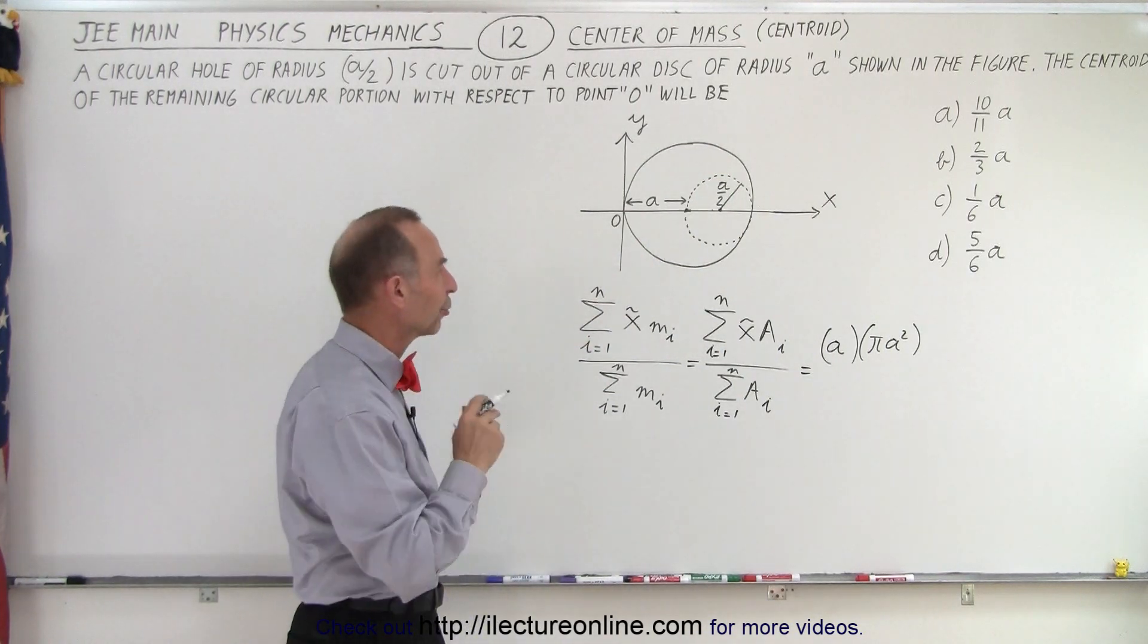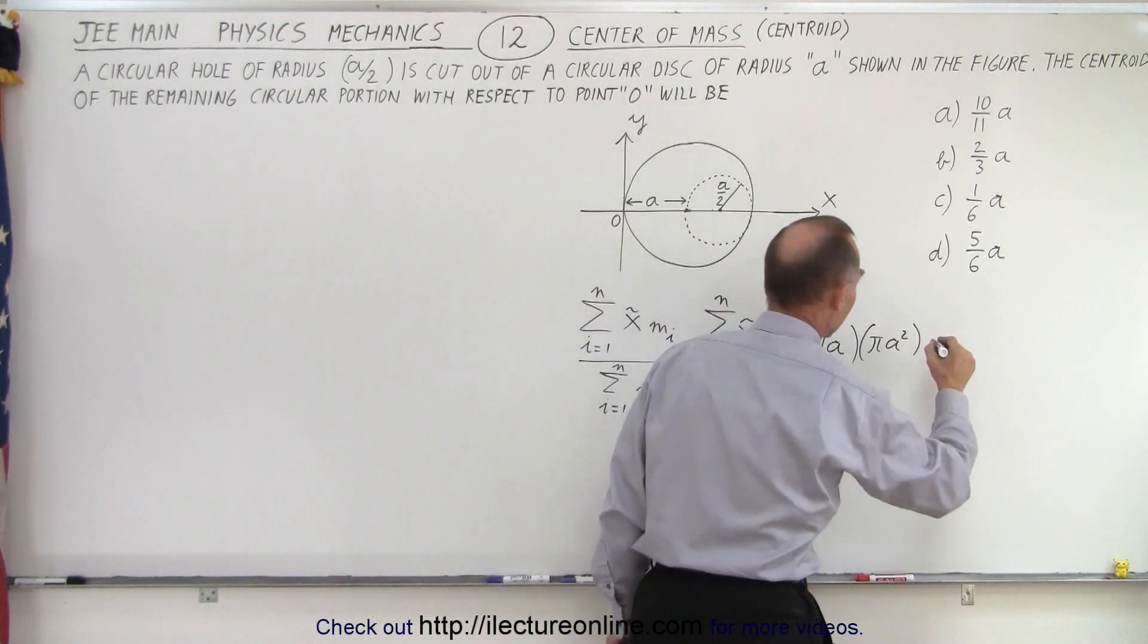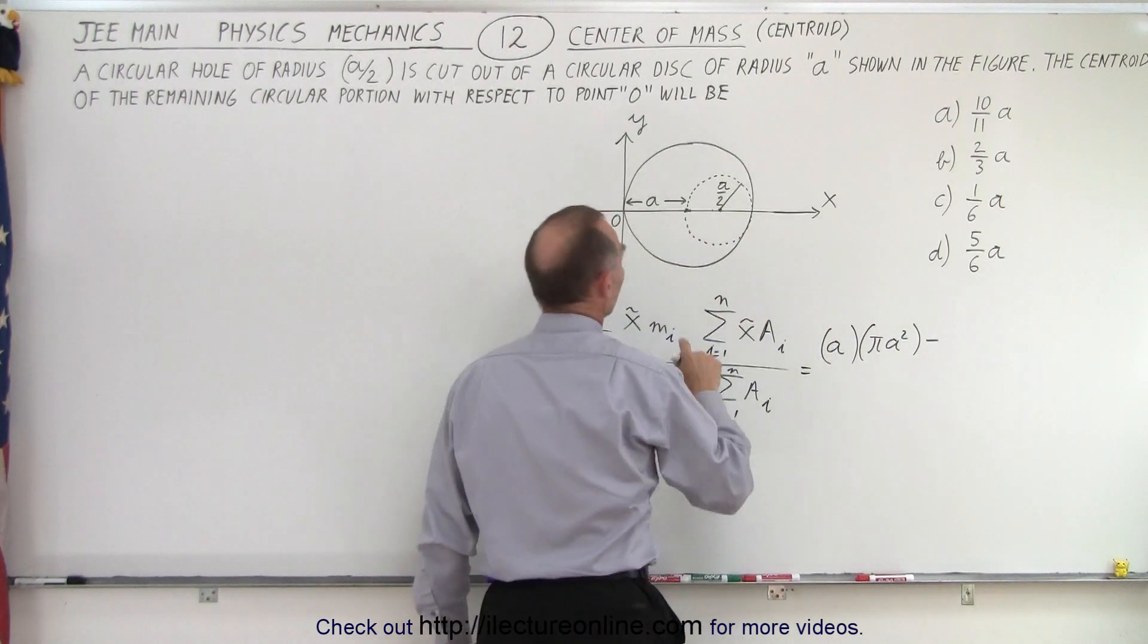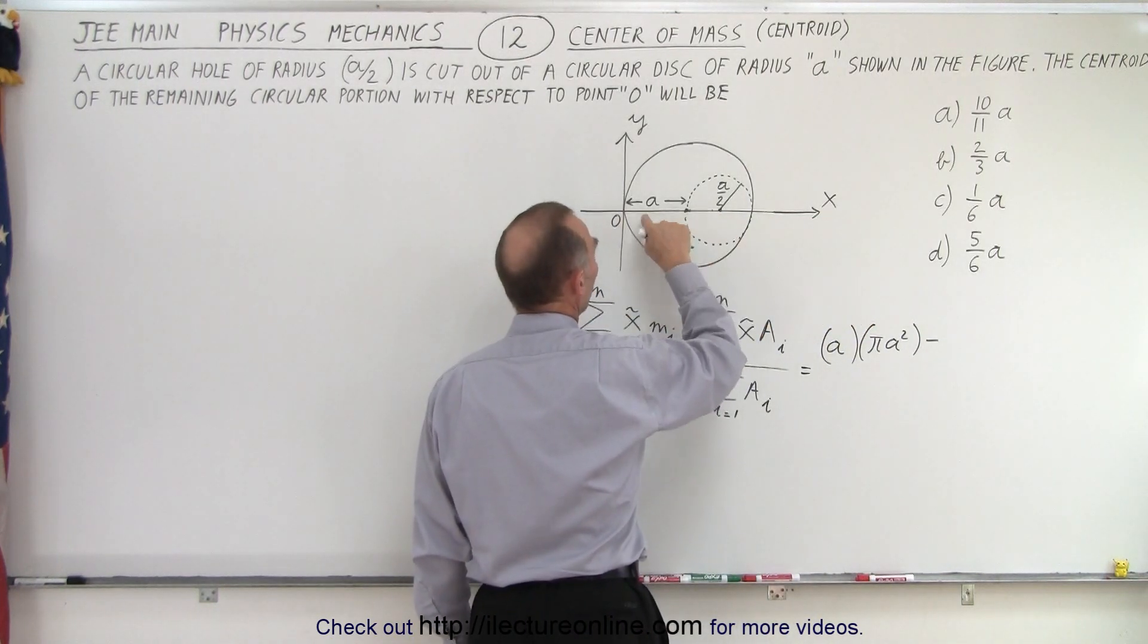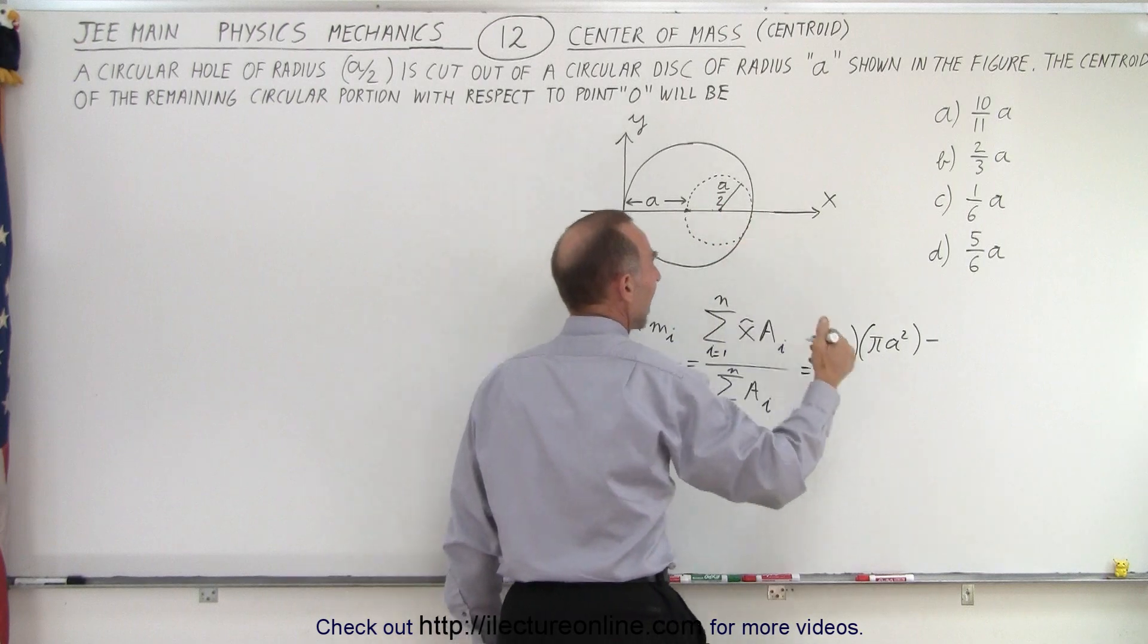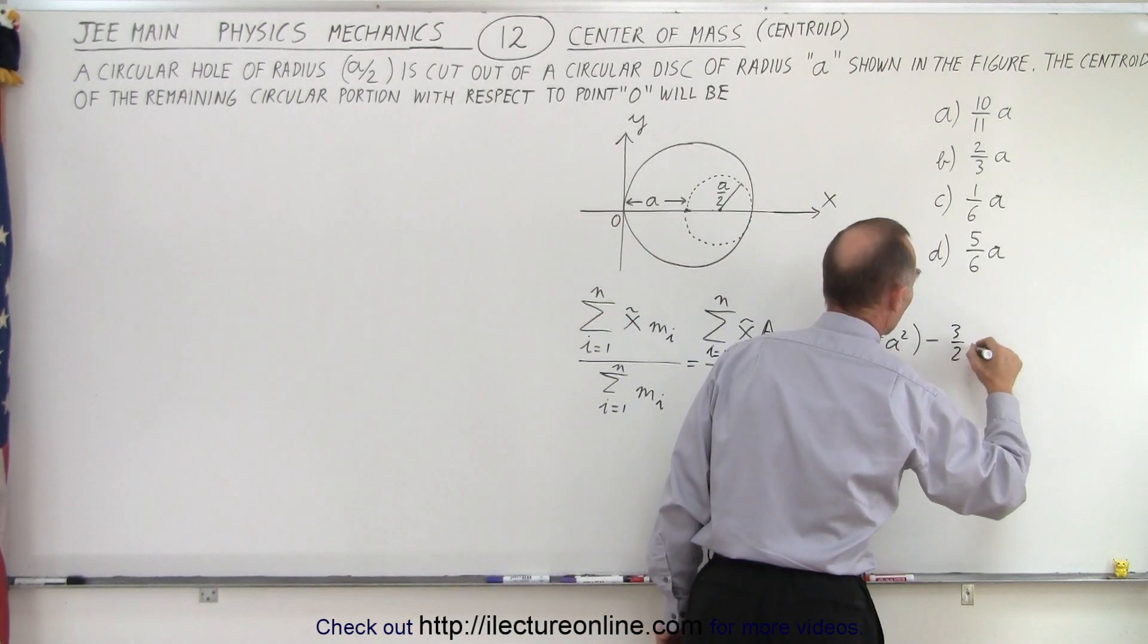Now we have to account for the hole. Since the hole is missing, we're going to subtract. The distance to the centroid of the hole would be a plus a half a, which is three halves a, three over two a.